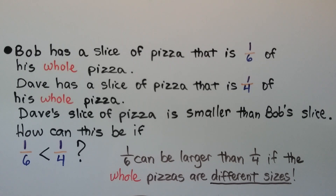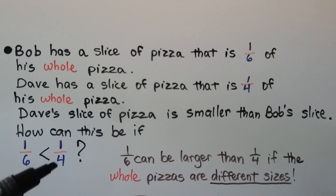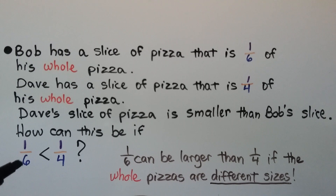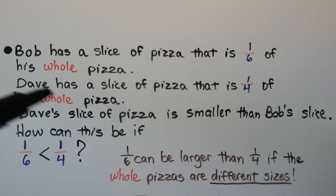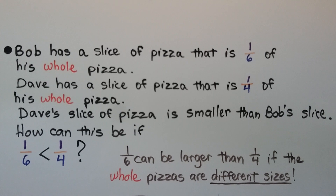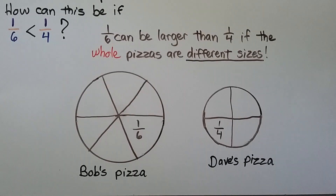Bob has a slice of pizza that is one-sixth of his whole pizza. Dave has a slice of pizza that is one-fourth of his whole pizza. We know that because four is the smaller denominator, one-fourth would normally be a larger piece than one-sixth. But it says Dave's slice is smaller — how could that be? One-sixth can be larger than one-fourth if the whole pizzas are different sizes. That's why you have to be careful: when comparing fractions, you must compare the same size whole.